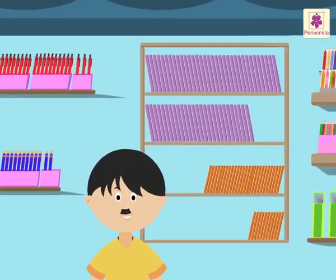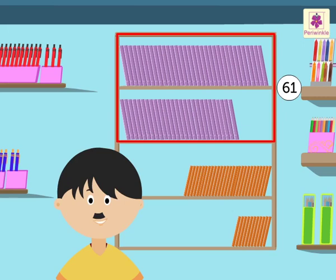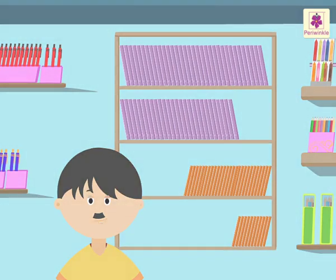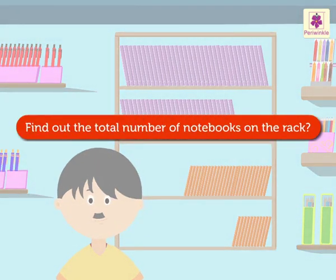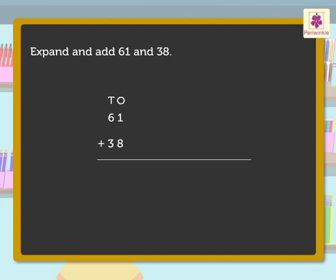Look, there are so many notebooks on the rack! In the shop there are 61 long notebooks and 38 small notebooks. Find out the total number of notebooks on the rack. Here, expand and add 61 and 38. Now write the numbers in tens and ones.